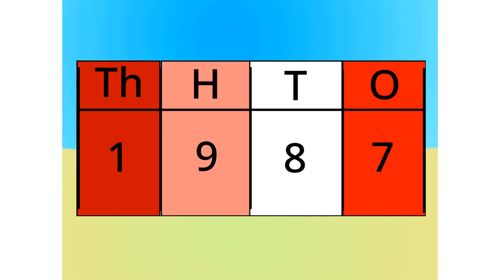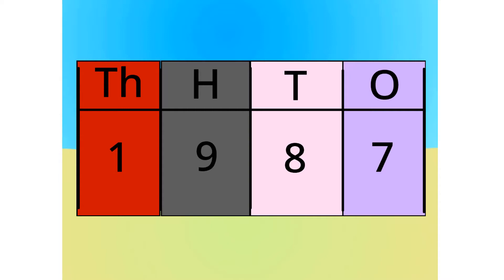This number is made up of 1,900s, 8 tens, and 7 ones. See? Let's see this in block form, shall we?